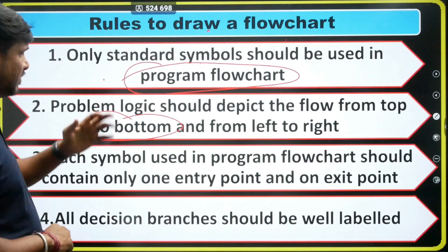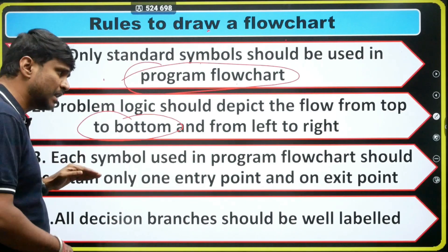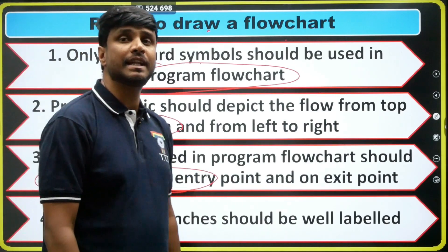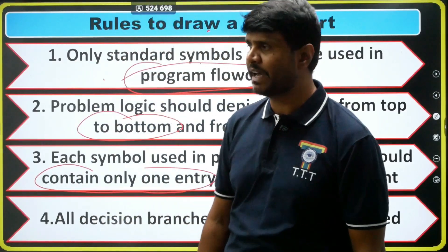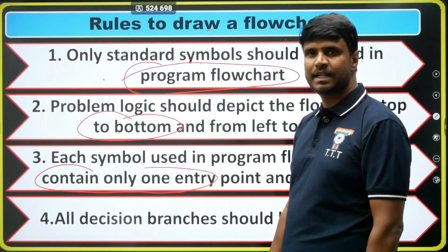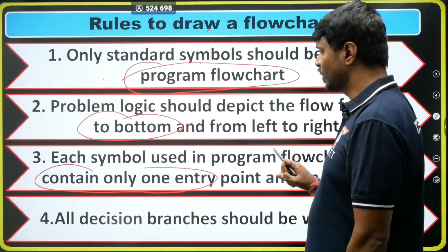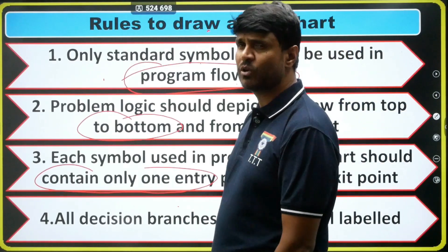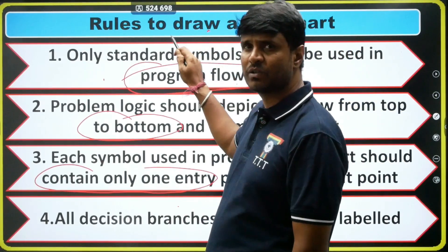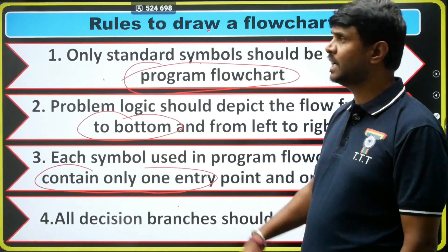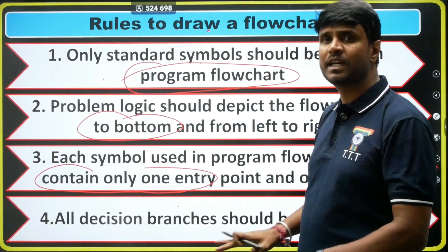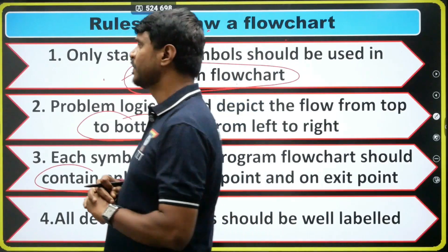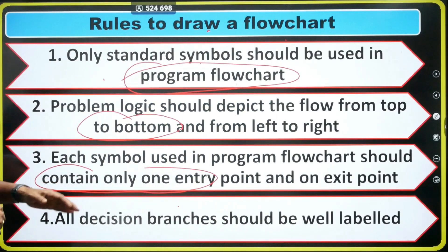The third rule is: each symbol used in a program flowchart should contain only one entry point and one exit point. So there is only one entry point and one exit point for each symbol.